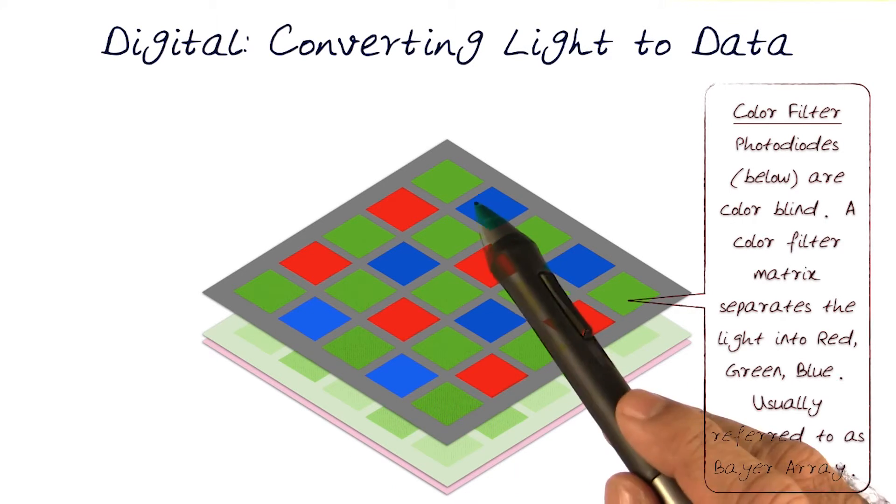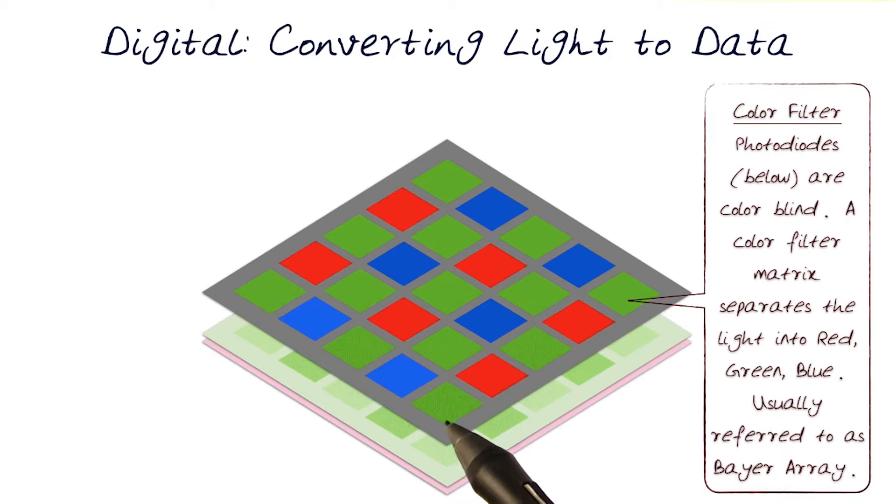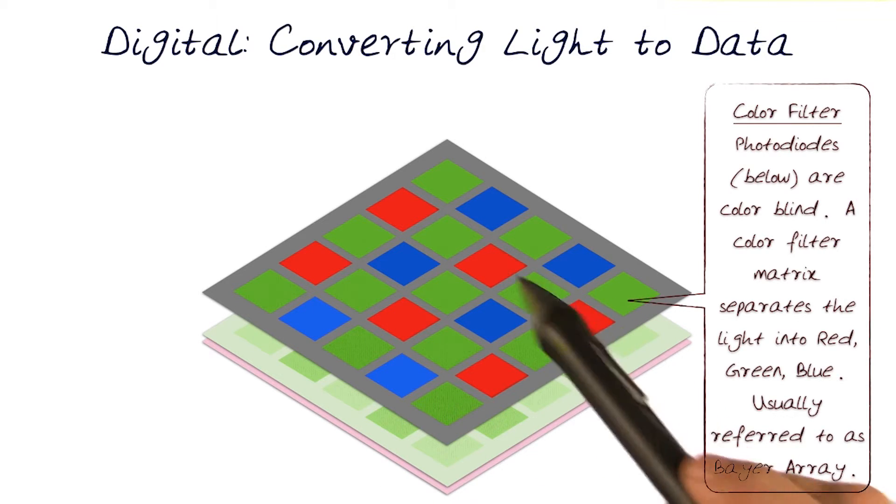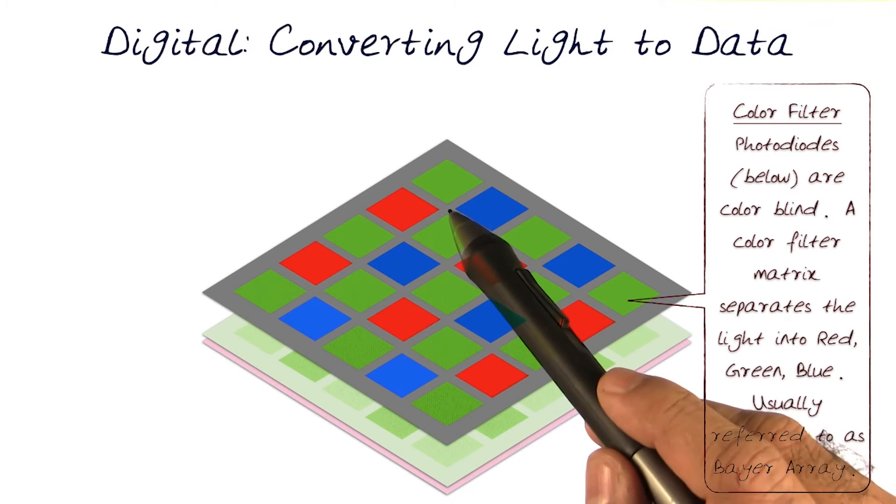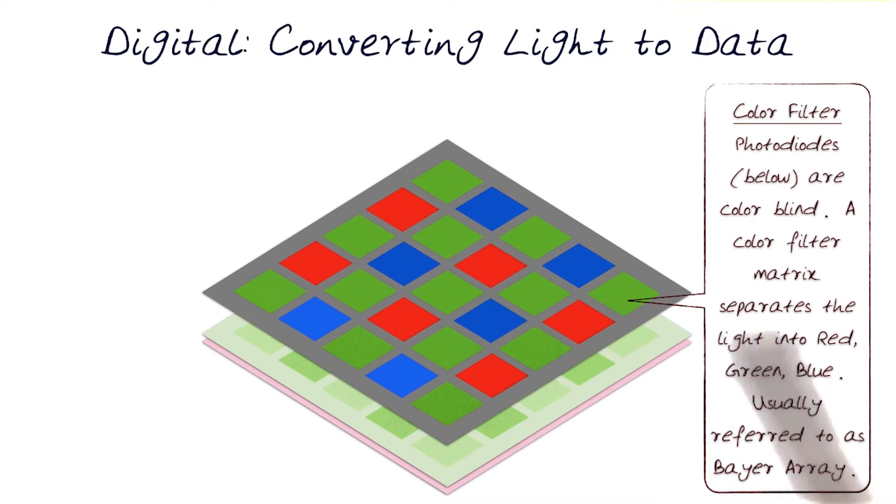This pattern is unique, and knowing this pattern is essential because it'll tell us how to convert the value from, in this case, two greens, red and a blue, to figure out what would be the value at this point of the image.